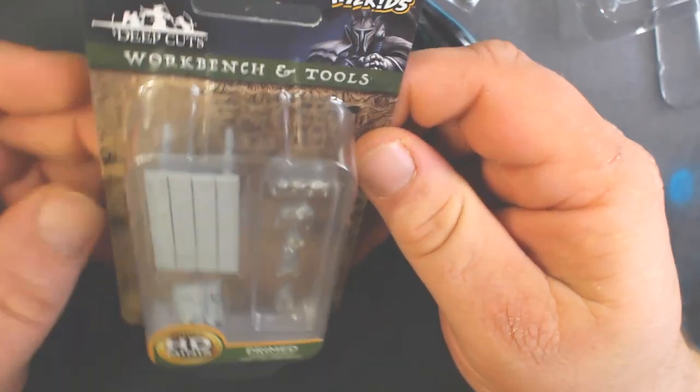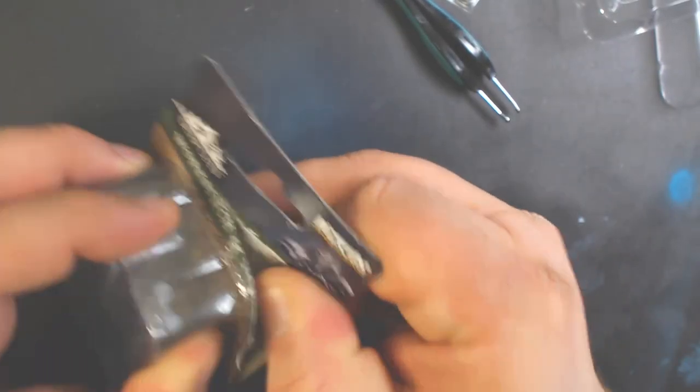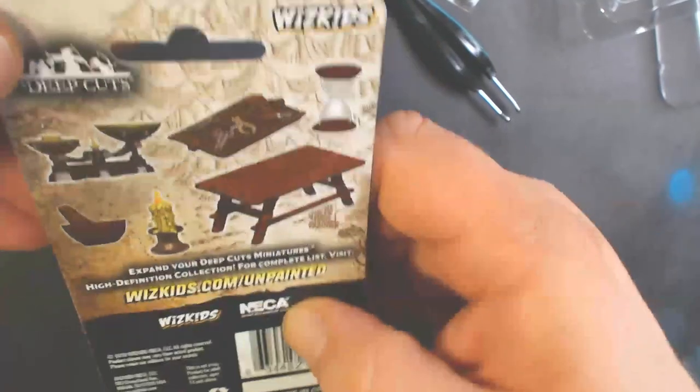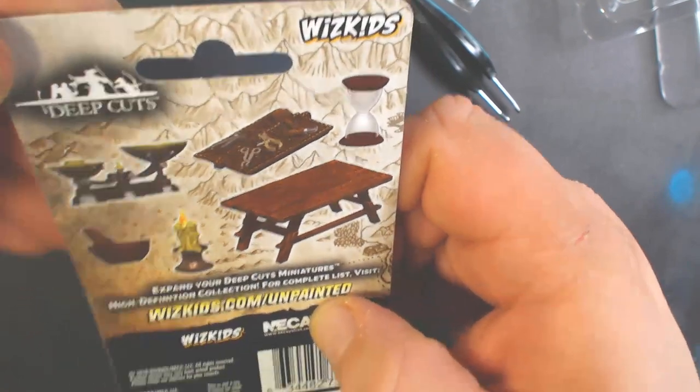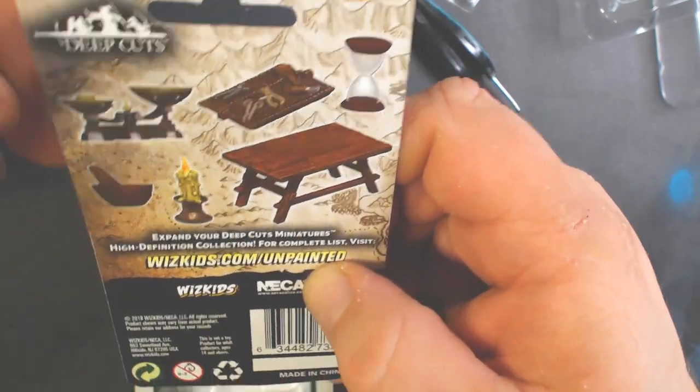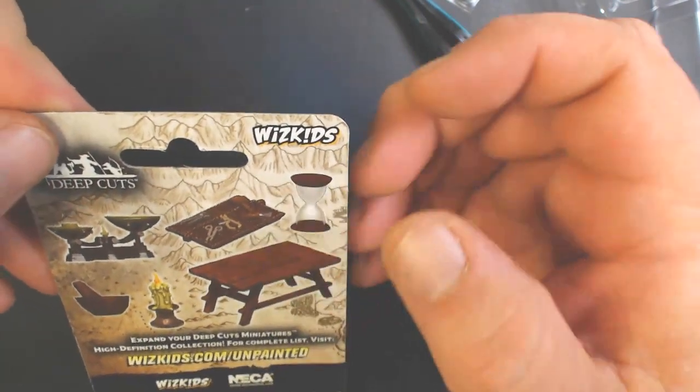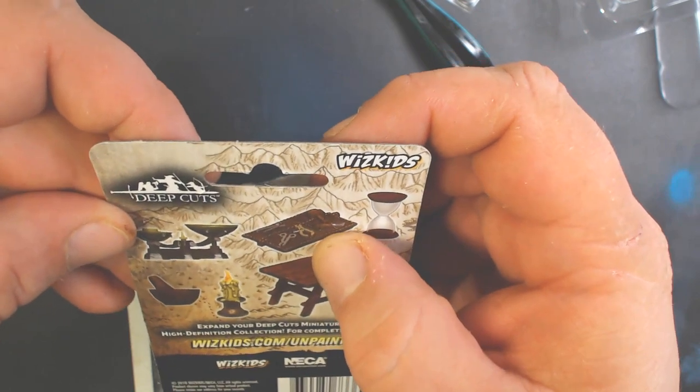All right, up next got a workbench and tools. I should show you guys the backs of these too - they have rendered colored art. So we've got a scale, mortar and pestle, candle, workbench, hourglass, and like a pouch with some different tools on it. Check those out.